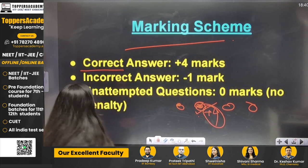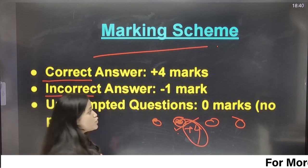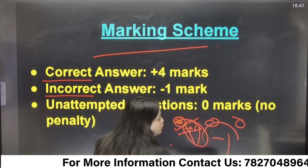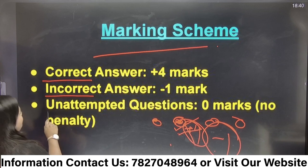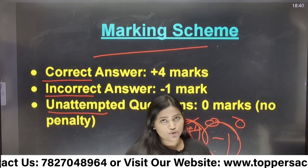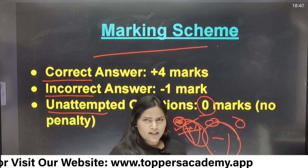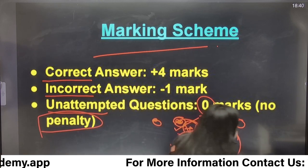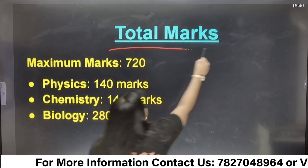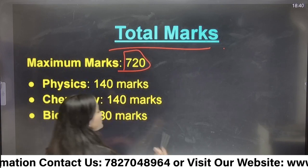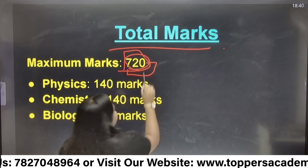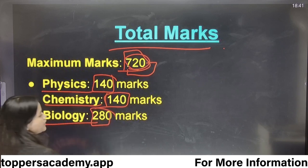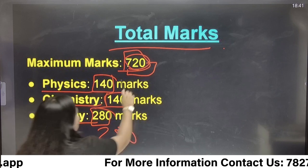For every correct answer, you get plus 4 marks. If you have an incorrect answer, there is negative marking. If a question is unattempted, no marks are deducted. This exam contains a total of 720 marks. Physics carries 140 marks total, Chemistry carries 140 marks total, and Biology — Botany and Zoology combined — carries 280 marks, giving a total of 720.